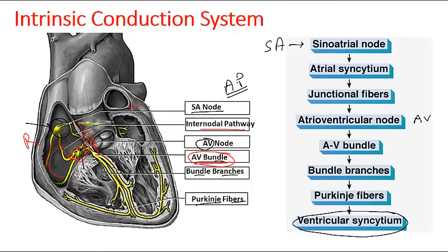The bundle branches are portions of the AV bundle that are distributed — called AV bundle branches. These convey the action potential to the interventricular septum, which is present between the two ventricles. Finally, they release it to the Purkinje fibers, which are further branched portions of the bundle branches. These begin at the lower interventricular septum, travel to the apex of the heart, and continue superiorly throughout the myocardium of the ventricles. The Purkinje fibers convey the action potential to the contractile cells of the ventricle, helping them to contract and completing the process of the rhythm.